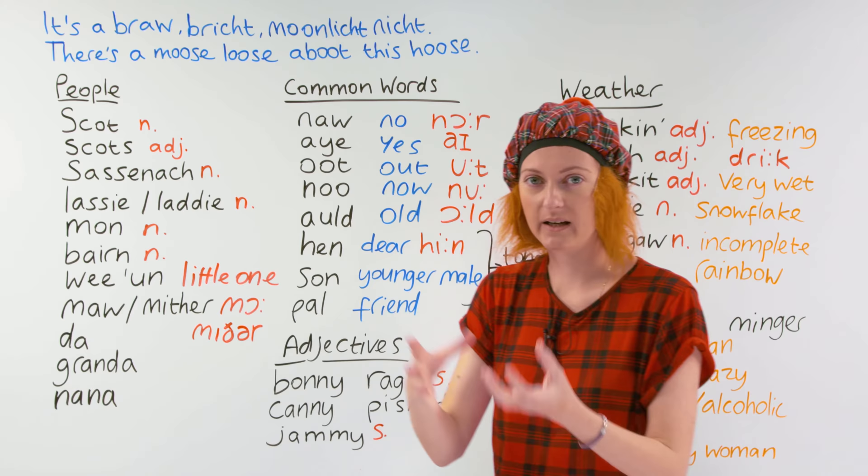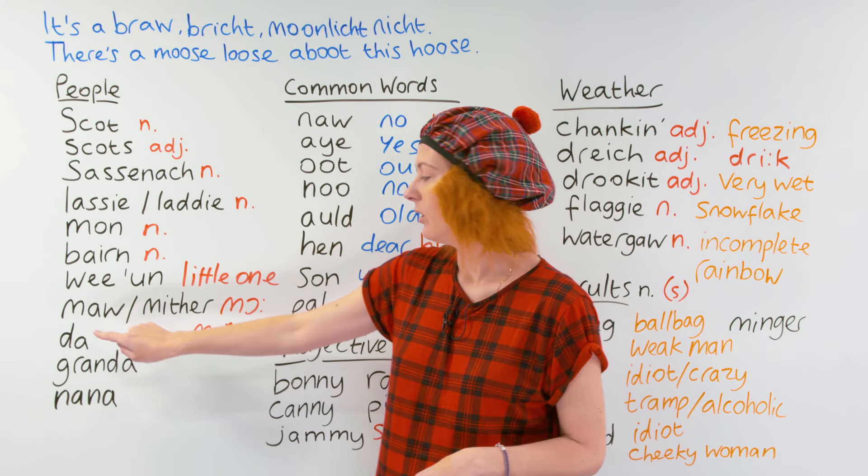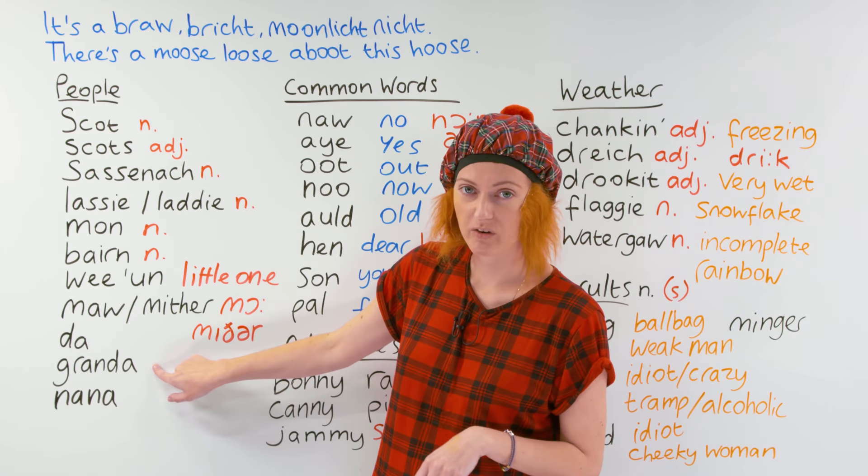The words for mother — there are two words you can use. You can say maw, or mother. And for dad, you say da. Granda is grandad, and nana is grandmother.